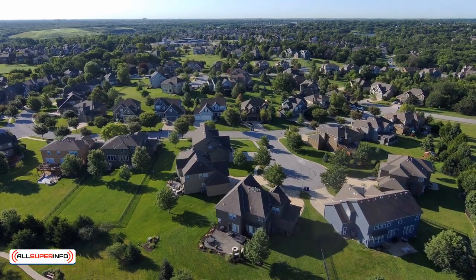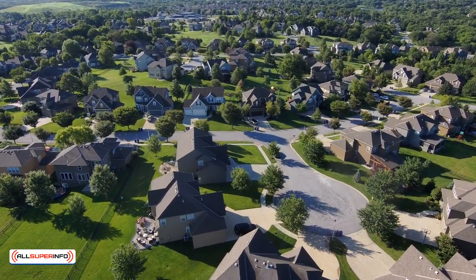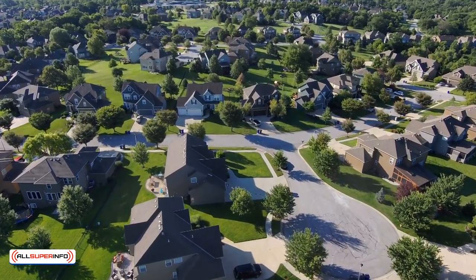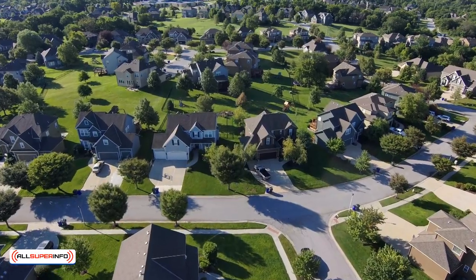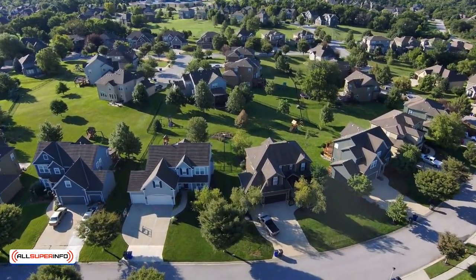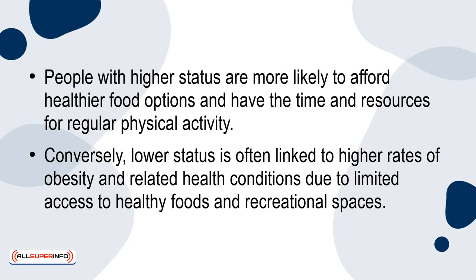Socioeconomic status can also determine the quality of the environment in which individuals live and work. For example, individuals with higher status are more likely to live in neighbourhoods with less pollution, better recreational facilities and greater safety. People with higher status are more likely to afford healthier food options and have the time and resources for regular physical activity. Conversely, lower status is often linked to higher rates of obesity and related health conditions due to limited access to healthy foods and recreational spaces.